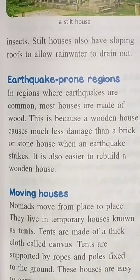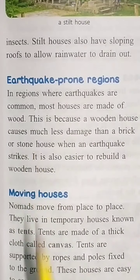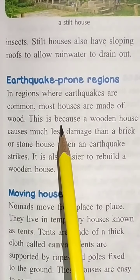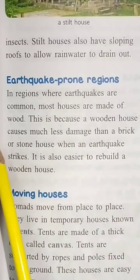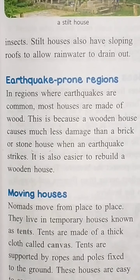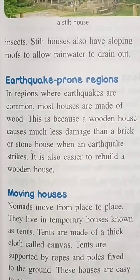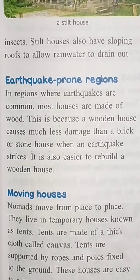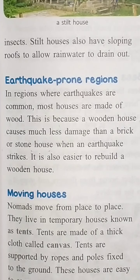Earthquake-prone areas. Ab un jagahon ke baare mein padhenge, jahan pe bahut badi matra mein kabhi bhi earthquake ho sakta hai, bhookamp aa sakta hai. In regions where earthquakes are common, most houses are made of wood. A wooden house causes much less damage than a brick or stone house. Beita, ek lakdi jab toot jati hai, toh dobaara se lakdi se ghar bana diya jayega. Lekin jab cement, bricks, ya pattharon se ghar banate hain aur bhookamp aata hai, toh insaan ke upar bhi girega toh zyada nuksan ho sakta hai, shayad jaan bhi ja sakti hai. Isliye earthquake area mein zyada tar lakdi wale ghar hote hain.